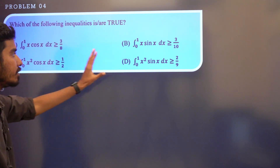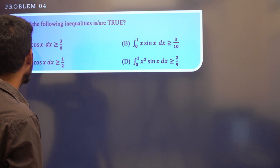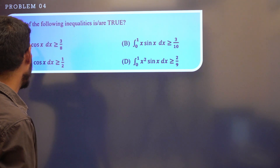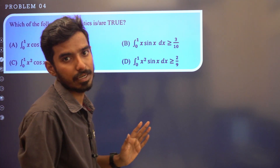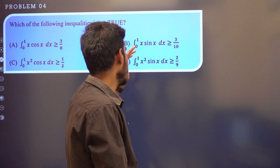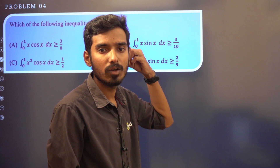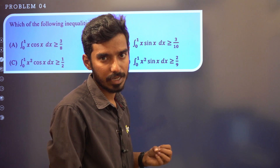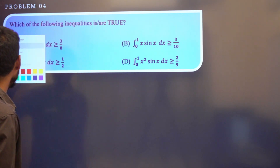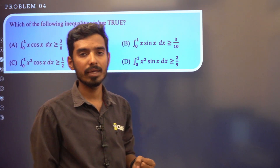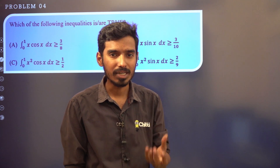Now, what are the inequalities? We need to check: integration of 0 to 1 of x·cos(x) dx is always greater than or equal to 3/8, and integration of 0 to 1 of x·sin(x) dx is always greater than or equal to 3/4. To solve this, we need to know the sin x and cos x expansions.